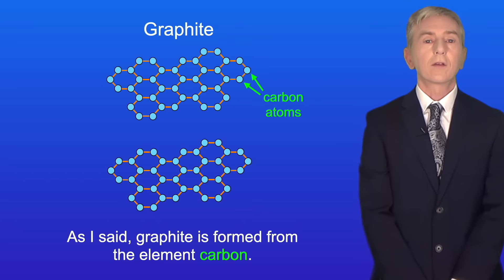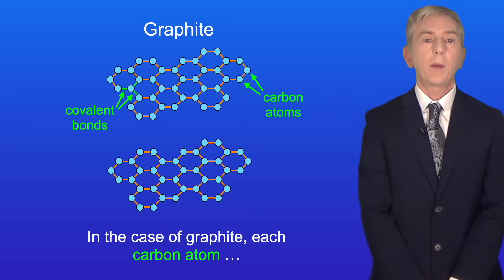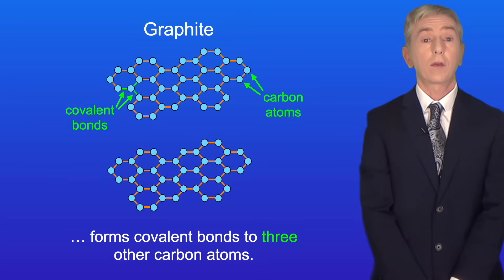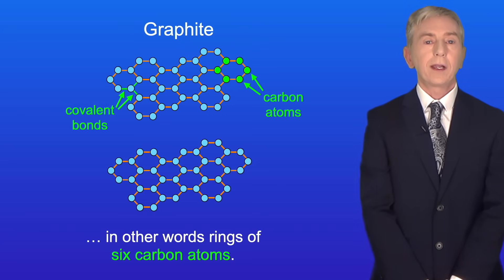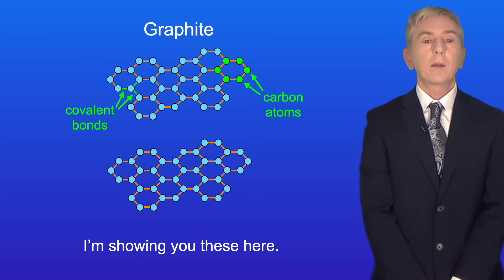As I said graphite is formed from the element carbon. Now in the case of graphite each carbon atom forms covalent bonds to three other carbon atoms. The carbon atoms form hexagonal rings, in other words rings of six carbon atoms and I'm showing you these here.